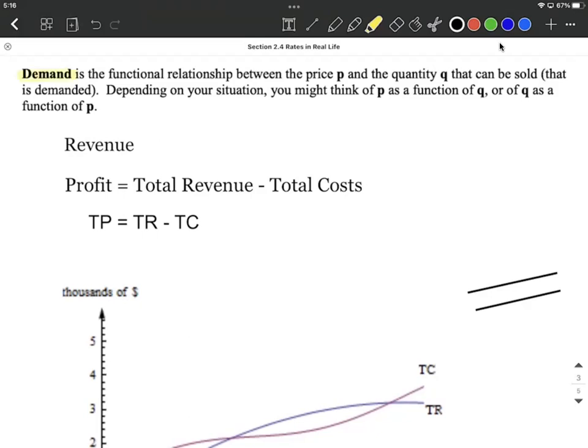So when we talk about demand function, this is a relationship between price P and quantity Q. Now, these can be a little bit confusing. The price that we're charging and the quantity that we're selling or that's being demanded. These can be used in a couple different contexts. All you have to know is this is a function that connects together price and quantity.